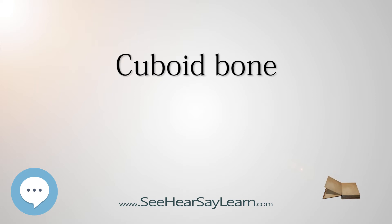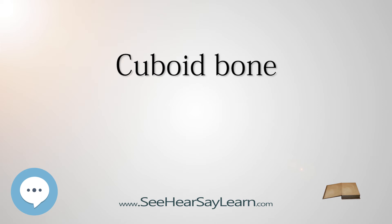The posterior surface is smooth, triangular, and concave for articulation with the anterior surface of the calcaneus at the calcaneo-cuboid joint. Its inferomedial angle projects backward as a process which underlies and supports the anterior end of the calcaneus. The anterior surface, of smaller size but also irregularly triangular, is divided by a vertical ridge into two facets forming the fourth and fifth tarsometatarsal joints.